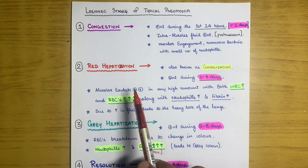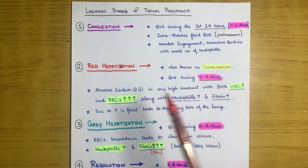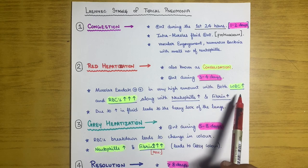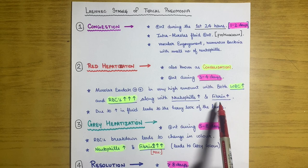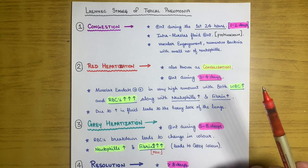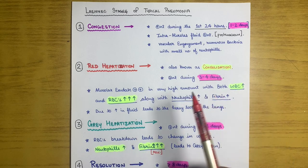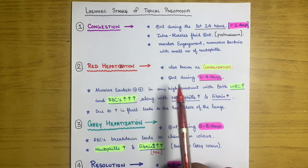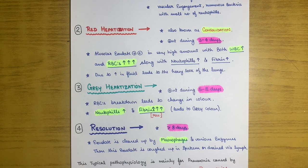The second stage is red hepatization, also known as consolidation. It is present during days three to four. Alveolar exudate is present in very high amounts with increased WBCs, RBCs, neutrophils, and fibrin. The increased RBCs give the lungs a heavy red appearance — that is why it is called red hepatization.